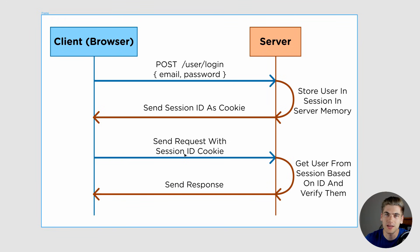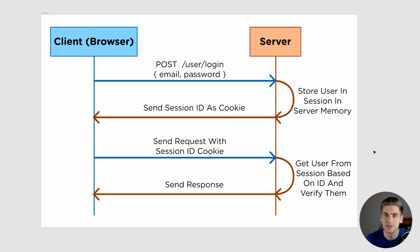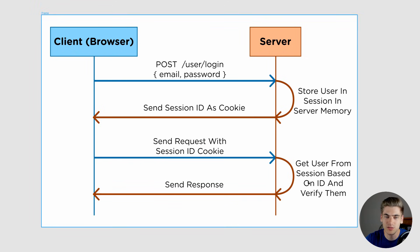The browser always has that session ID and sends it up to the server every single time it makes a request. So, for example, when the client needs to make another request — like going to a new page — that session ID gets sent along with the cookie to the server. At the server, it goes into the session memory and checks: do I have something in memory that corresponds to this particular ID? If so, it retrieves the corresponding user. Now the application knows which user it's working with, checks if they're authorized, and if so, sends the response back to the browser.